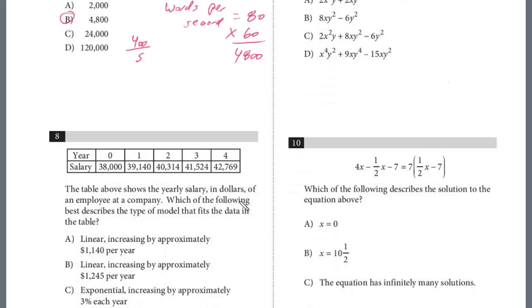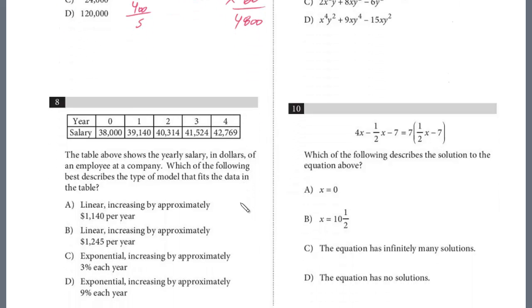Let's take a look at question 8. The table above shows the yearly salary in dollars of an employee at a company. Which of the following best describes the type of model that fits the data? If you look at the choices, we have to determine if it's linear or exponential and what the annual increase is. The best way to do this when you have a table like this is just focus on the first increase. Here, we don't know yet if it's linear or exponential.